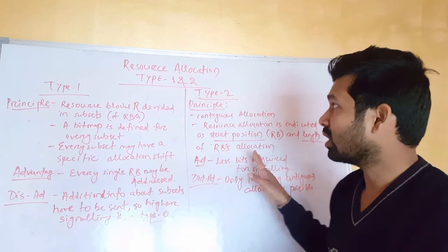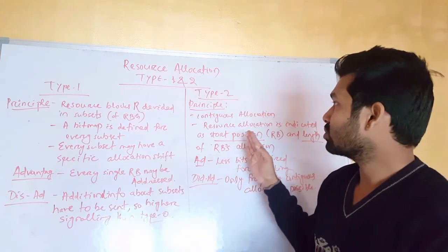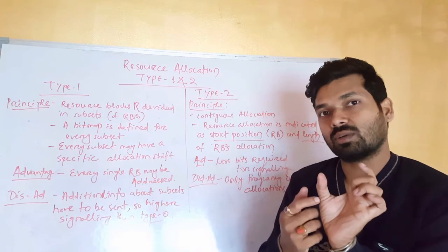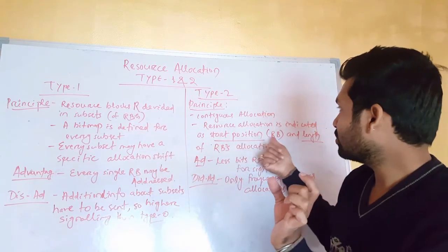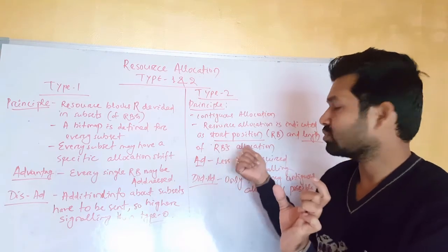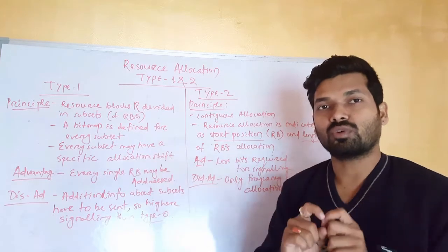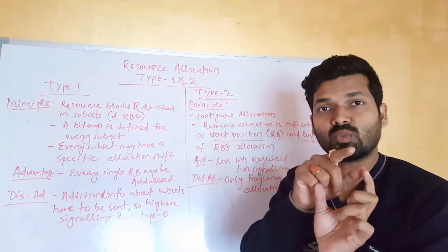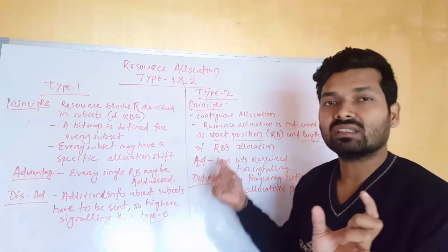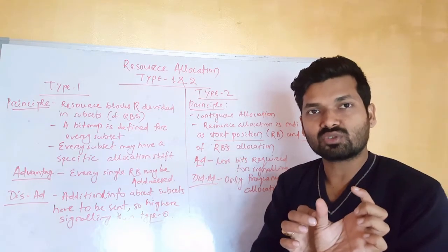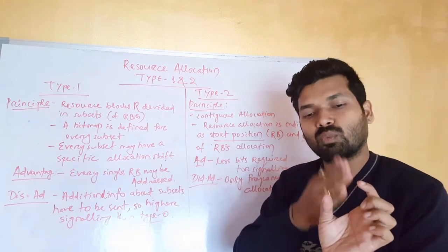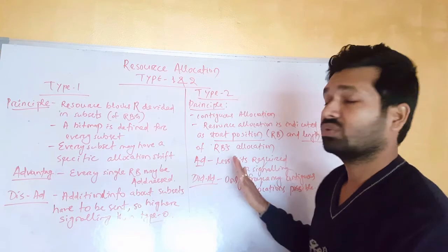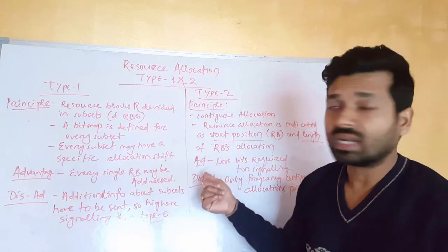Type 2 is continuous allocation. Resource allocation is indicated as a start position of a resource block and the length of the resource block allocation. For example, let's say you have 10 resource blocks and you want to assign blocks 1 to 5. You give the start position as resource block number 1 and the length as 5, meaning resource block 1 and then 4 other resource blocks are used for the user's allocation.